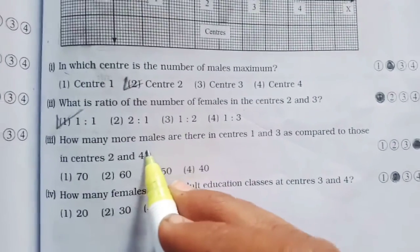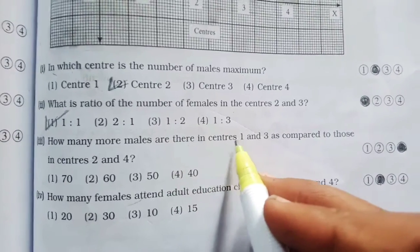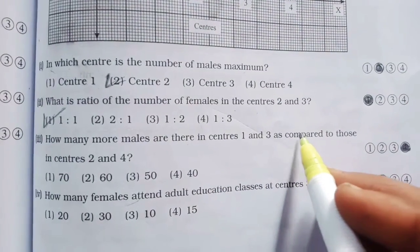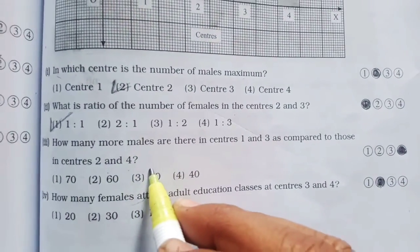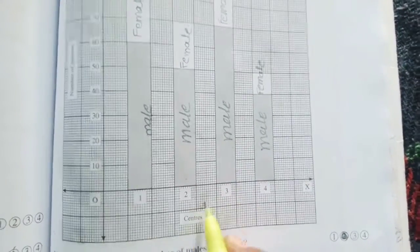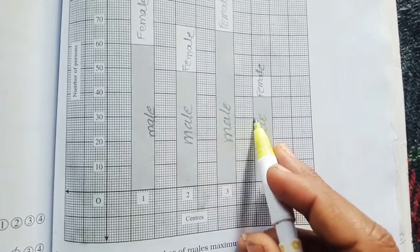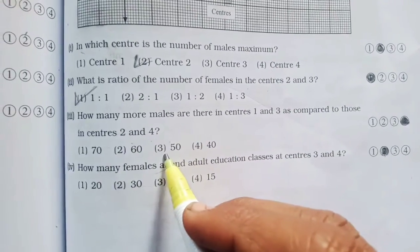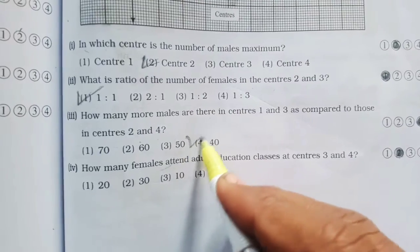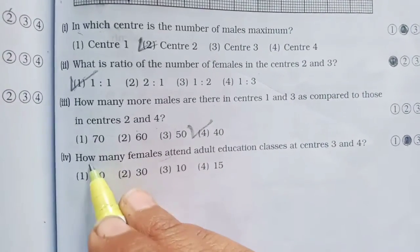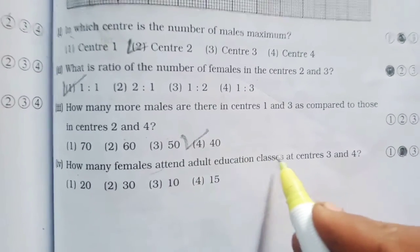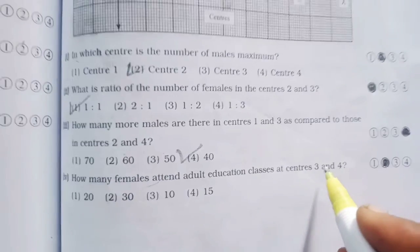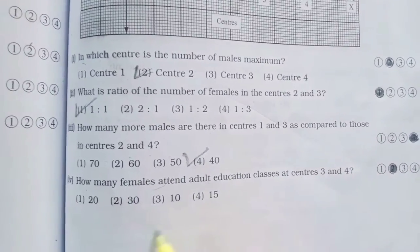How many more male are there in center one and three as compared to those in center two and four? Center two and four में, center two and four में इतके उत्तर आहे? Fourteen. Last question. How many female attend adult education classes at center three and four? Center three and four. Thirty.